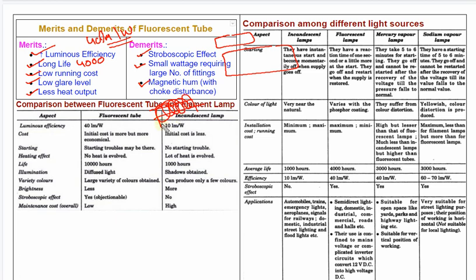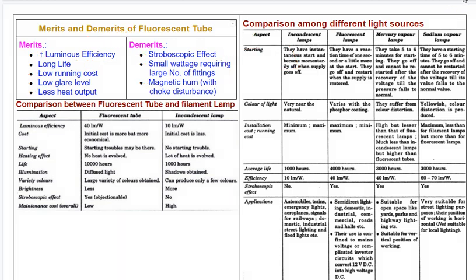When alternating current passes, we have laminations in the core. The magnetic hum causes a visual disturbance. That means it is a demerit of the fluorescent lamp.